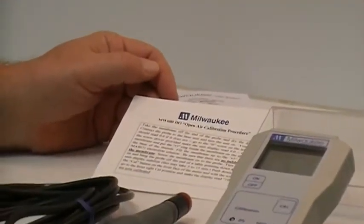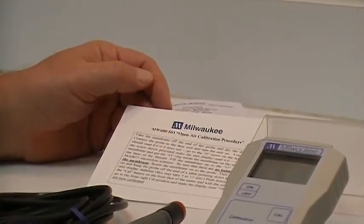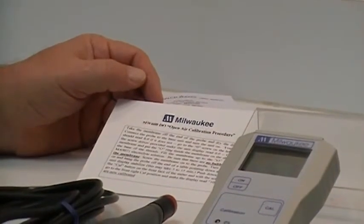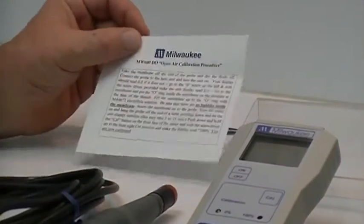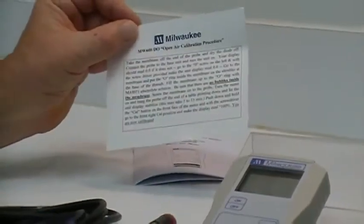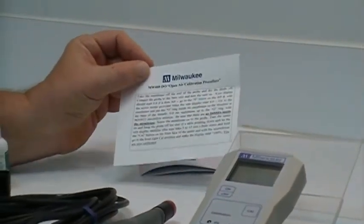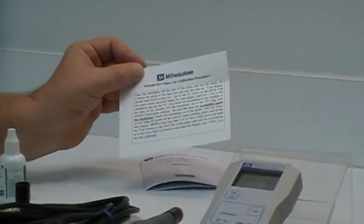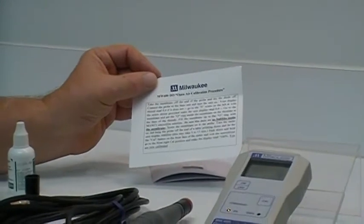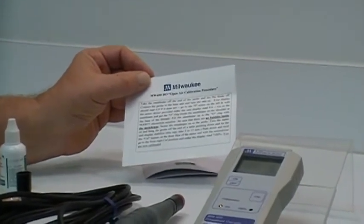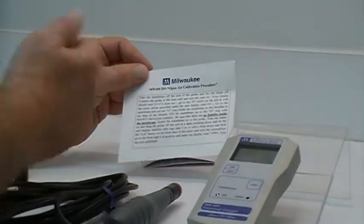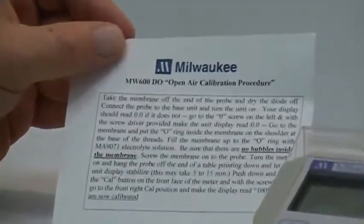Also included with your unit is the MW600 dissolved oxygen open air calibration procedure card. This is the open air calibration procedure that we would like for you to proceed with rather than what's in the manual. This is much easier and just as precise. The only reason for going to the manual using the zero oxygen calibration procedure would be if it is specified that you must have the zero oxygen to calibrate the unit. So we're going to be following these short instructions today and walking through step by step.